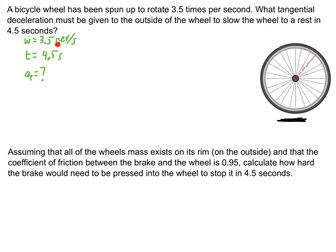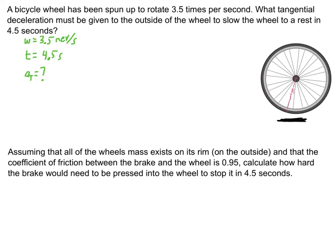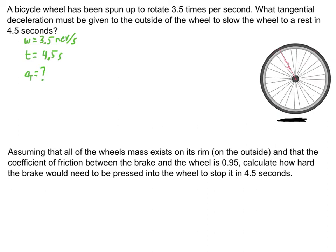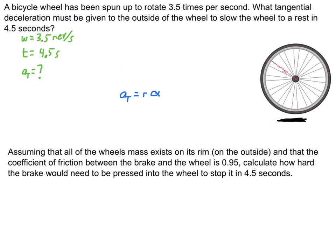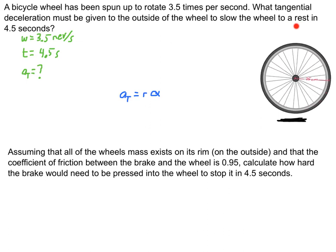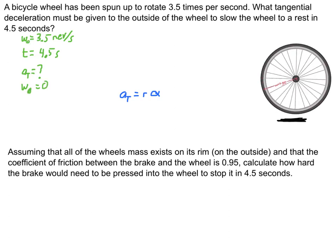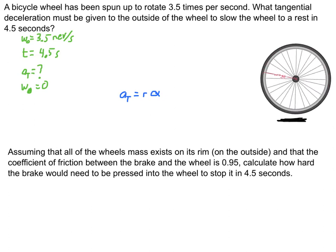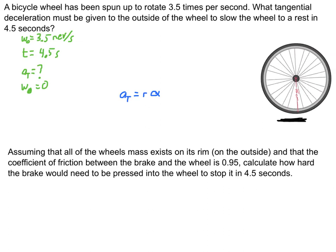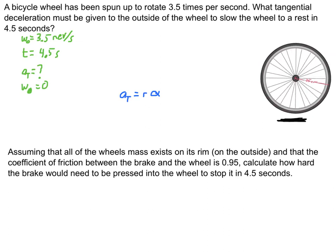Creating a variable bank: initial angular velocity is 3.5 revolutions per second. There's a problem - we're in revolutions, not radians, and we need radians to deal with tangential acceleration. We have a time of 4.5 seconds and we're looking for tangential acceleration. My final angular velocity omega is zero since we're stopping it. I have velocity and time and I'm looking for acceleration. But since they're angular quantities, the only way to get tangential acceleration is using the equation: tangential acceleration equals radius times angular acceleration. So I need to solve for angular acceleration first.